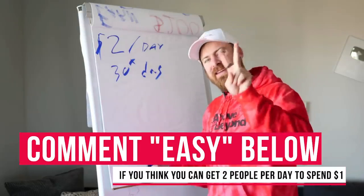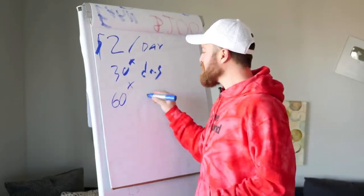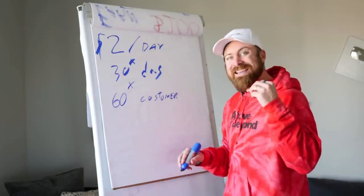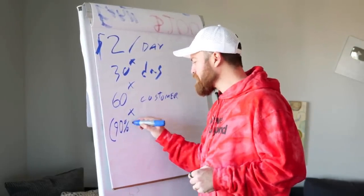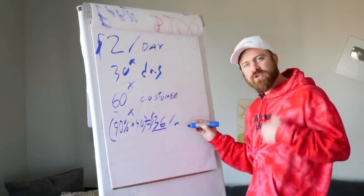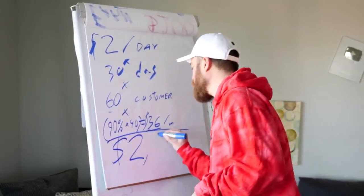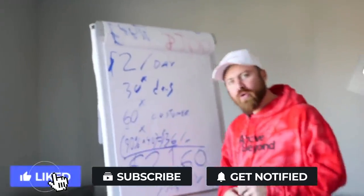2 people a day times 30 days — hopefully you're good enough to get 2 people to spend $1, right? That means you're getting 60 customers. The recurring revenue is 90% of $40, which is $36. So you have 60 customers times $36 a month — that leaves you with $2,160 a month in recurring revenue. If you can get 2 people to spend $1 every day, you will be getting roughly over $2,000 a month in recurring revenue, and you'll be selling a book that genuinely helps people.